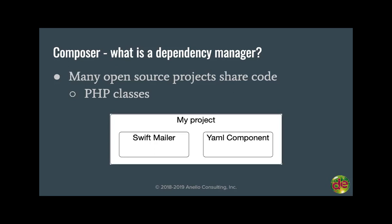In the days before dependency managers and before Composer, you could go to SourceForge, download code, throw it in your project directory, and include the right files. That's basically how things were done for a long time. That's what Drupal 7 did with jQuery — someone had to manually go download a specific jQuery version and commit it to the repo. Composer is the next level beyond that manual process.